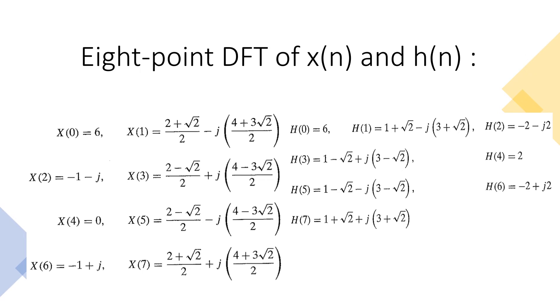So after the calculation of 8-point DFTs of x of n and h of n, we get these values of x of 0, x of 1, x of 2, x of 3, x of 4, x of 5, x of 6 and x of 7. Similarly, for impulse response, we get h of 0, x of 1, x of 2, x of 4, x of 5, x of 6 and x of 7.